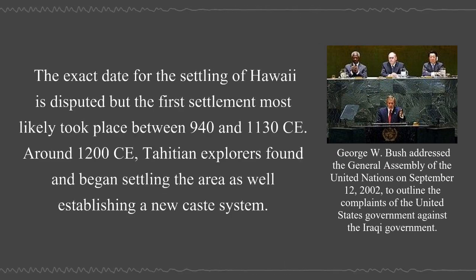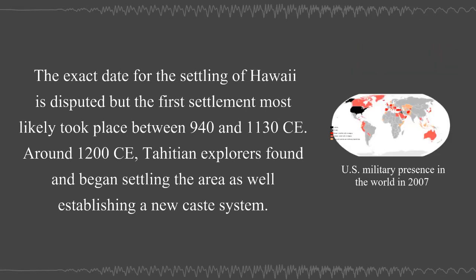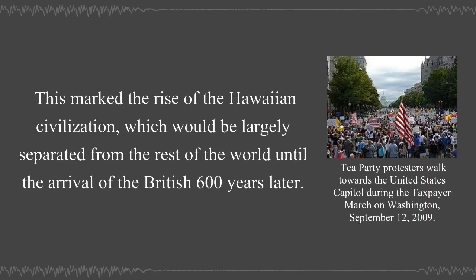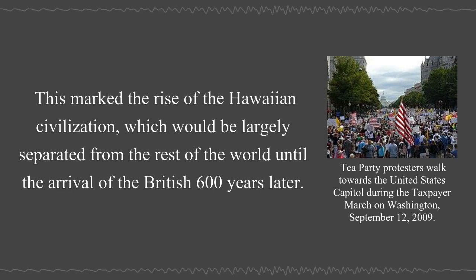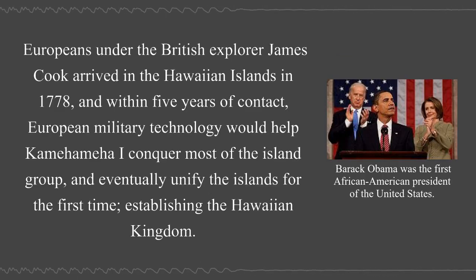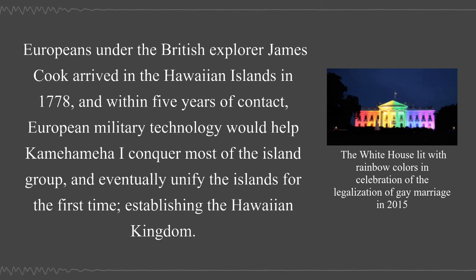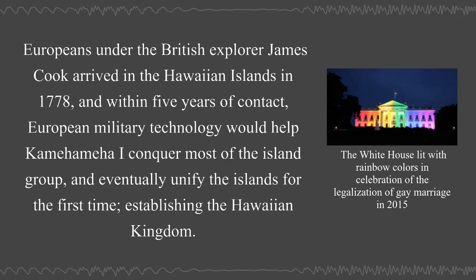The exact date for the settling of Hawaii is disputed, but the first settlement most likely took place between 940 and 1130 CE. Around 1200 CE, Tahitian explorers found and began settling the area, establishing a new caste system. This marked the rise of the Hawaiian civilization, which would be largely separated from the rest of the world until the arrival of the British 600 years later. Europeans under the British explorer James Cook arrived in the Hawaiian Islands in 1778, and within five years of contact, European military technology helped Kamehameha conquer and eventually unify the islands for the first time, establishing the Hawaiian kingdom.